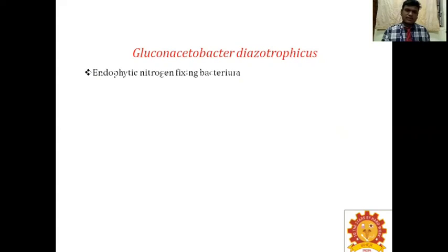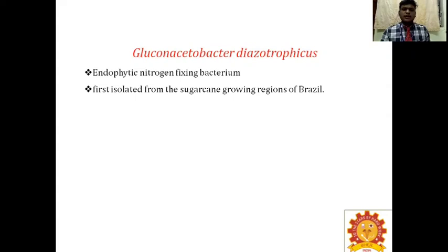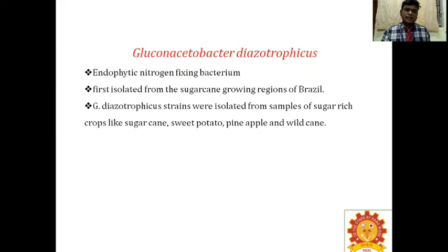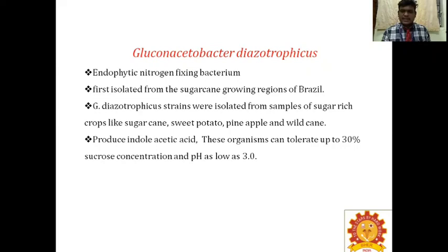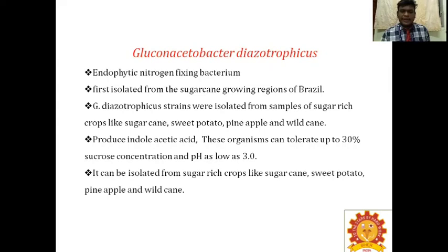The next one is Gluconacetobacter diazotrophicus. It is an endophytic nitrogen-fixing bacterium, often called endosymbiotic nitrogen-fixing bacterium. It was first isolated from sugar-growing regions of Brazil. Gluconacetobacter diazotrophicus strains were isolated from samples of sugar-rich crops like sugarcane, sweet potato, pineapple, and wild cane. It produces indole acetic acid. These organisms can tolerate up to 30% sucrose concentration and very low pH of 3.0.